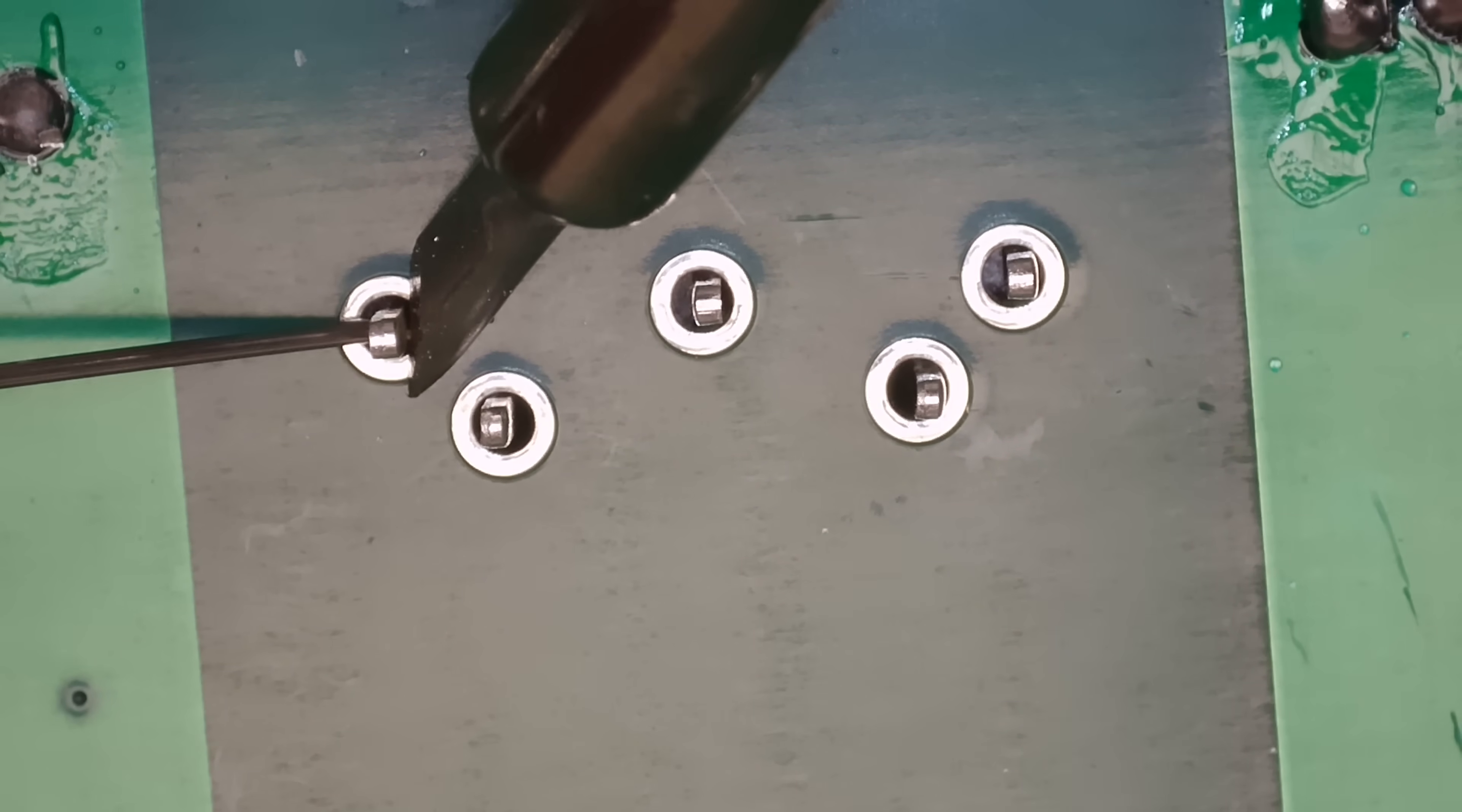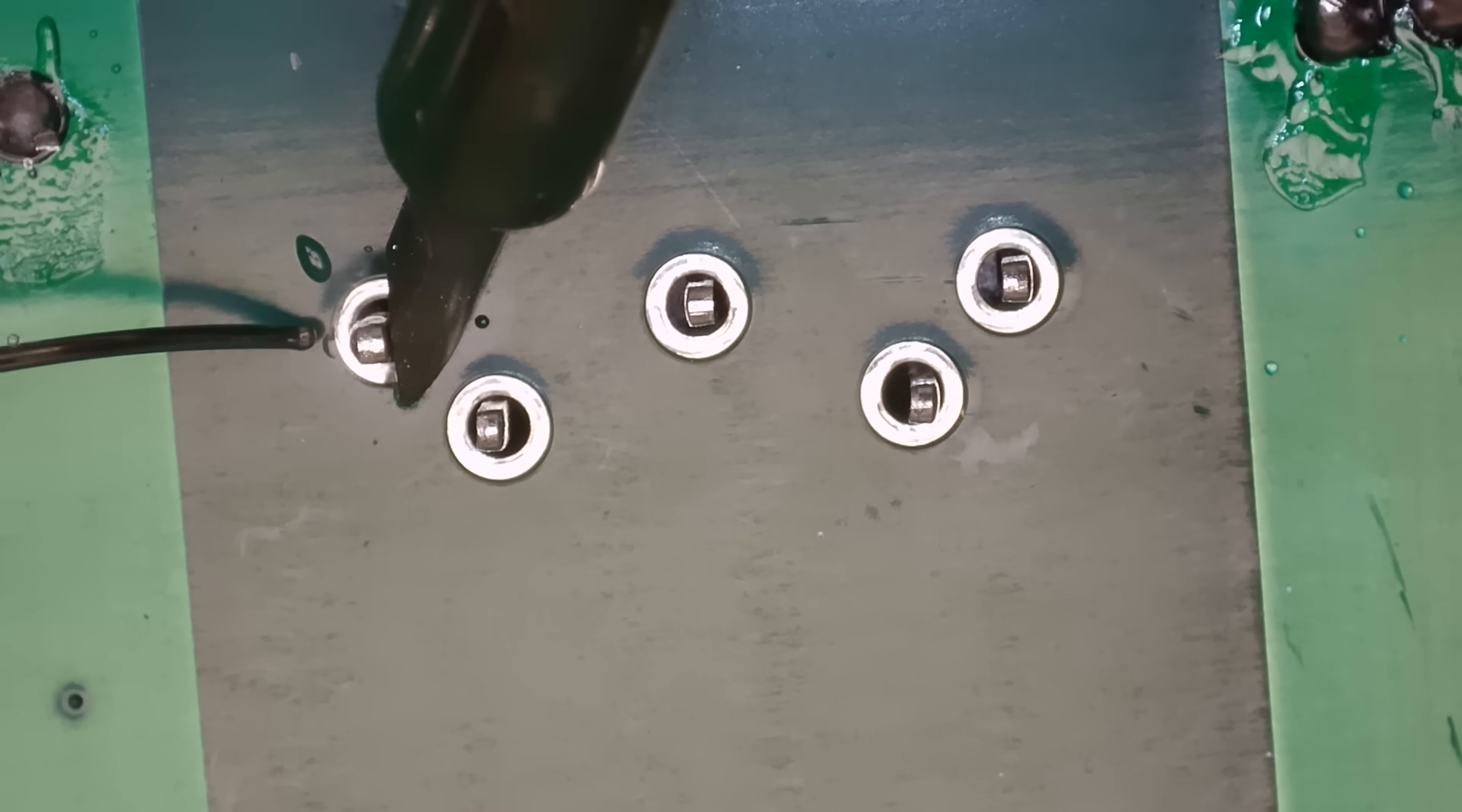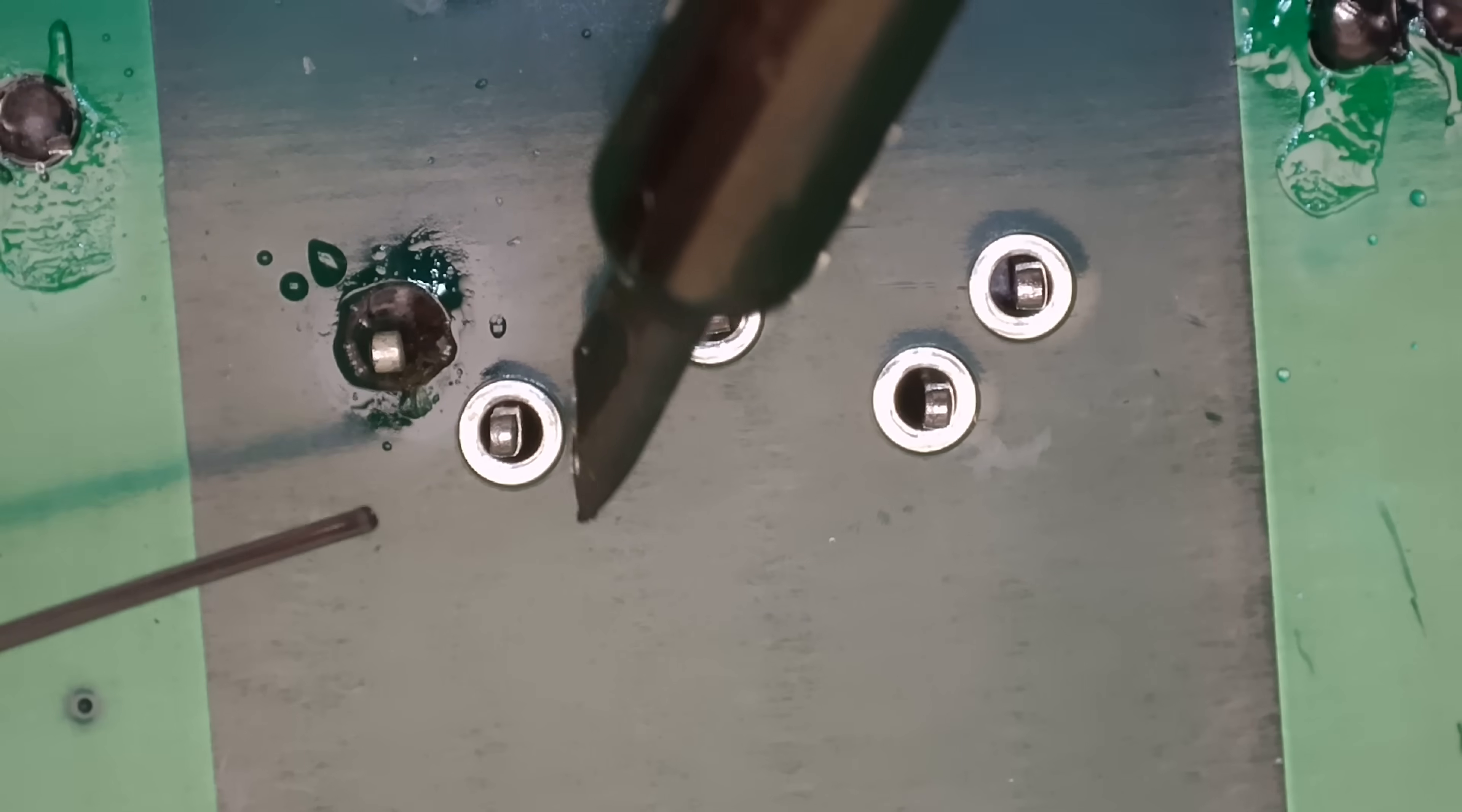After switching to the KU tip, this one looks like a chisel, it has a much larger thermal mass. The solder was now flowing much better with those larger ground pins and those larger pins for the MIDI DIN ports.